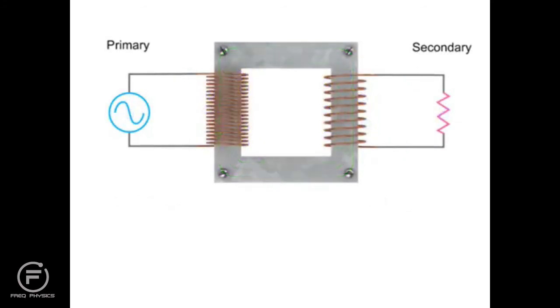If there are fewer coil turns on the secondary than on the primary, this is called a step down transformer. The resulting voltage in the secondary circuit will be less than the primary.